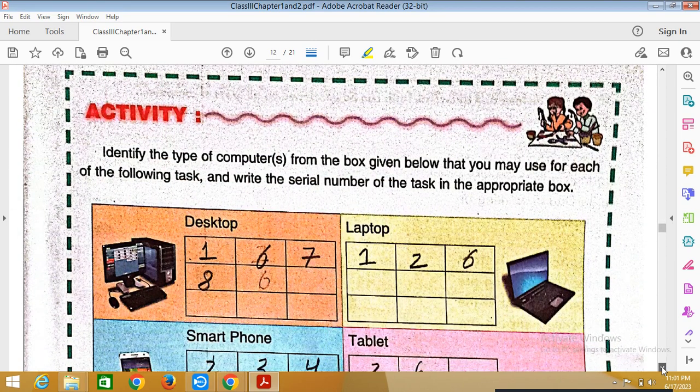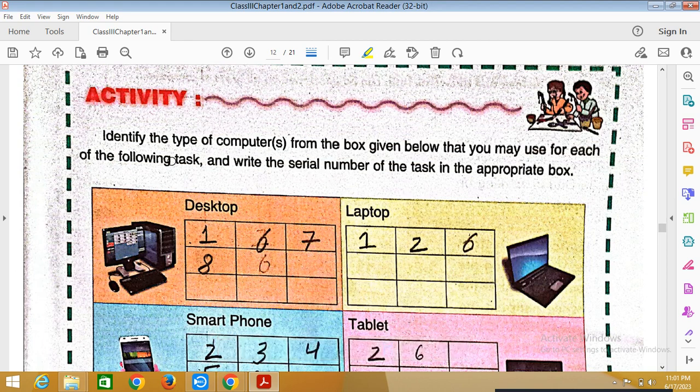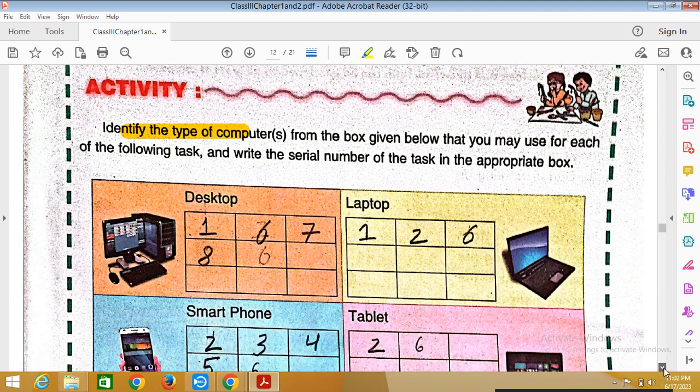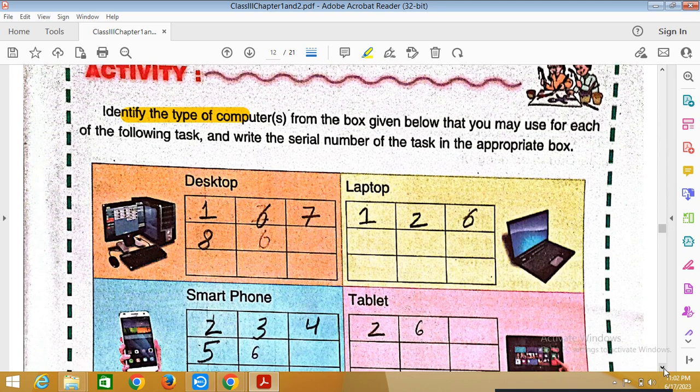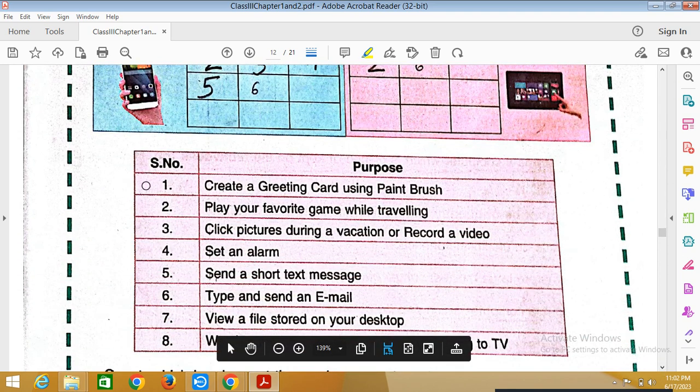Activity: Identify the type of computers from the box given below that you may use for each of the following tasks, and write the serial number of the task in the appropriate box. You can see the task, the different tasks. Serial numbers are one, two, three, four, five, six, seven and the purpose is given.